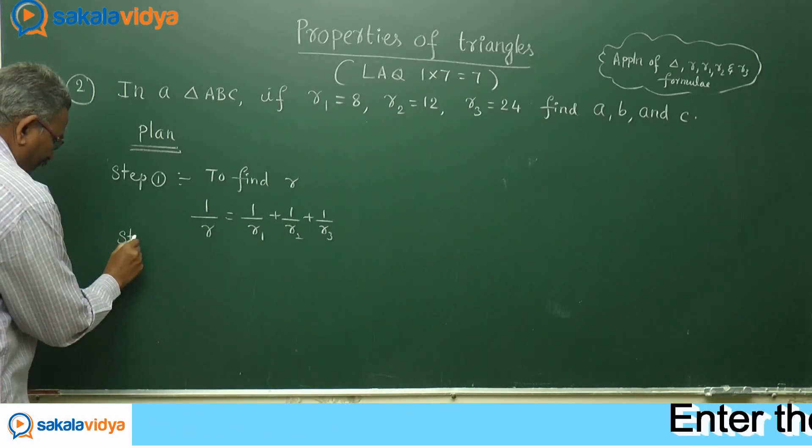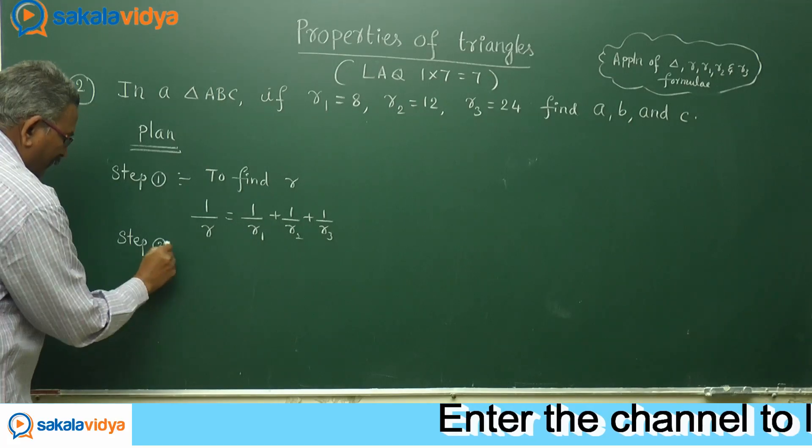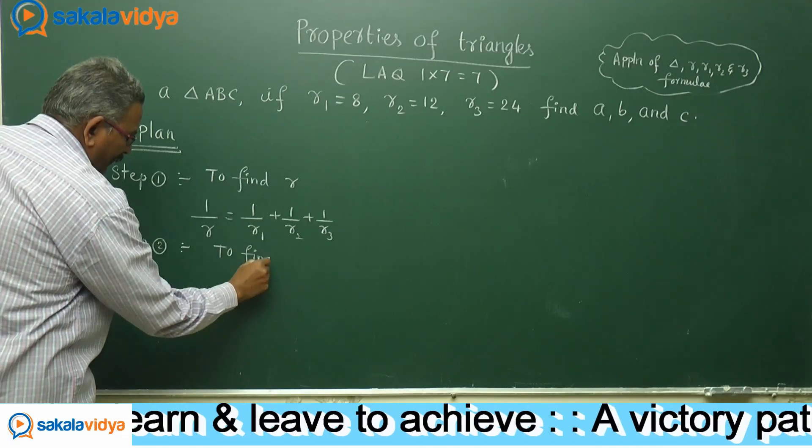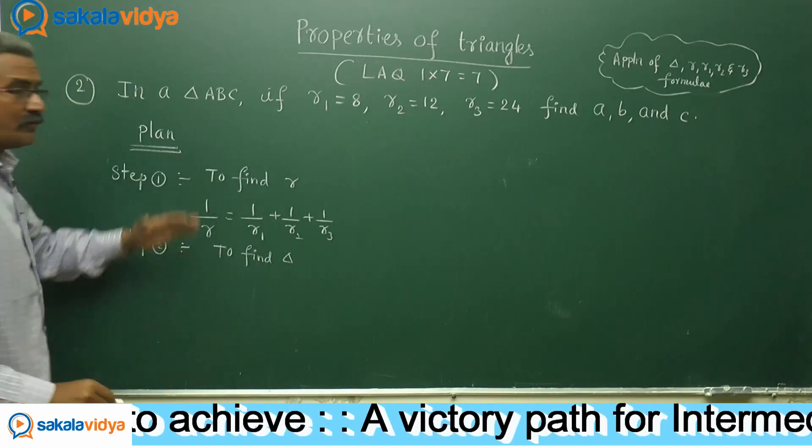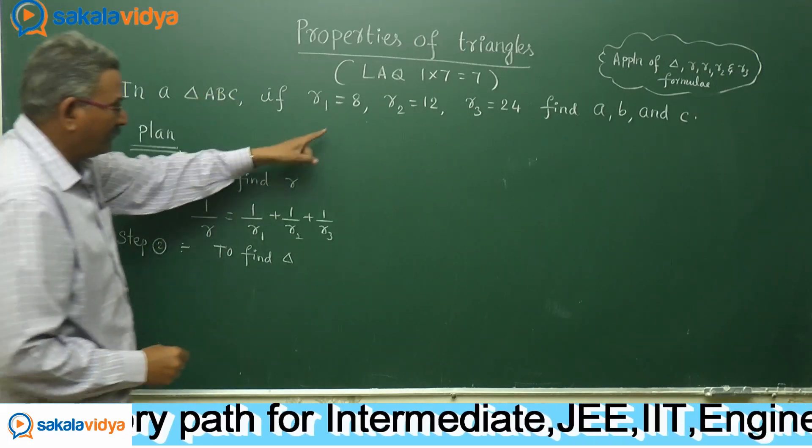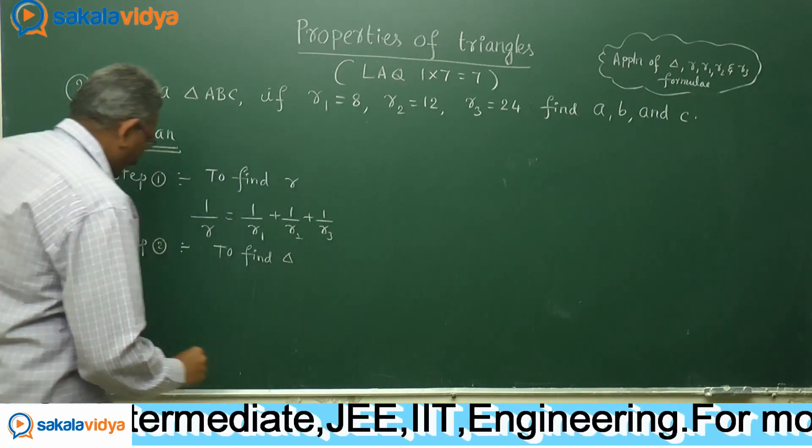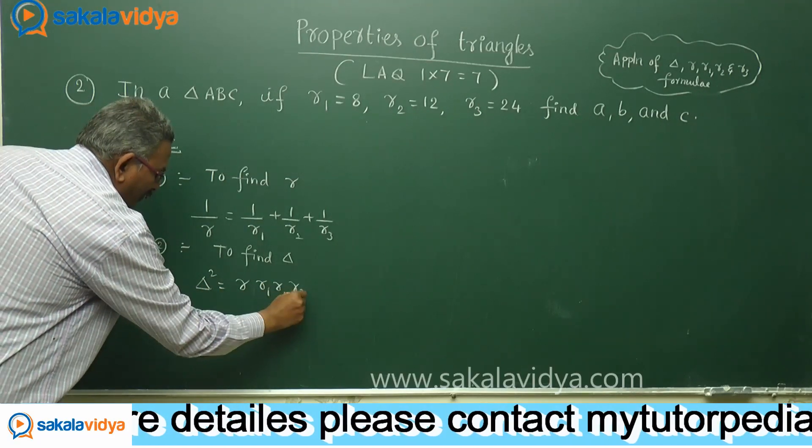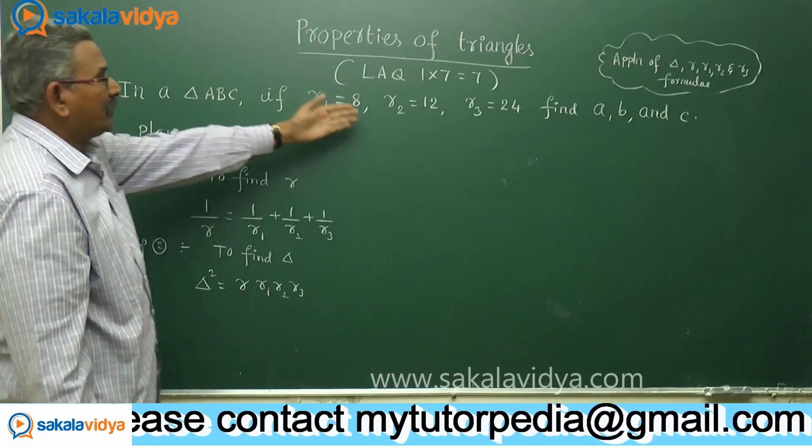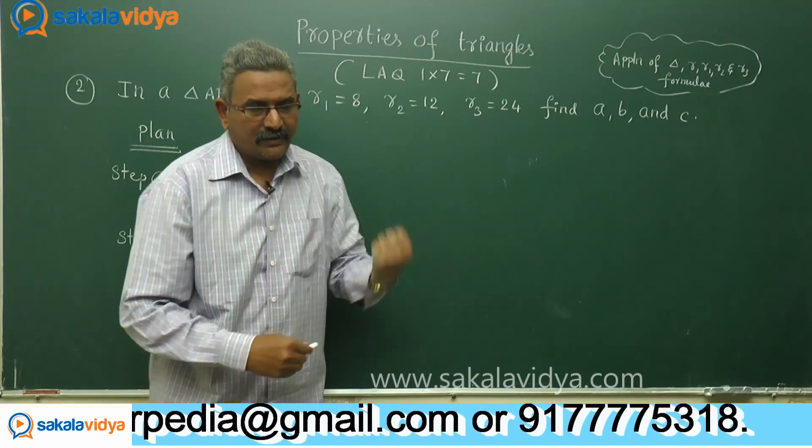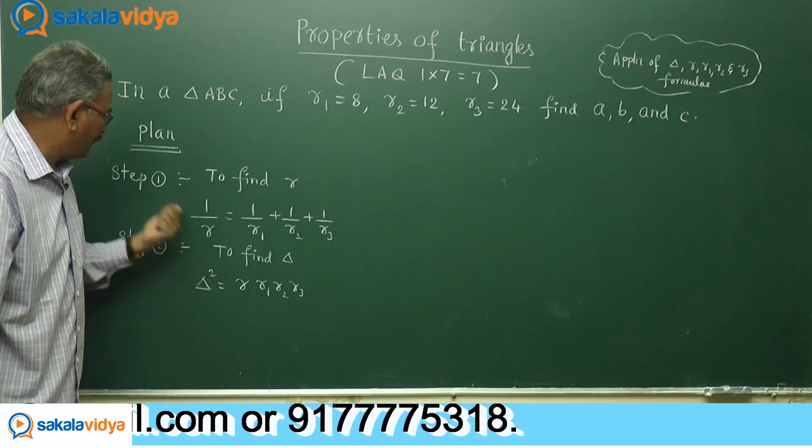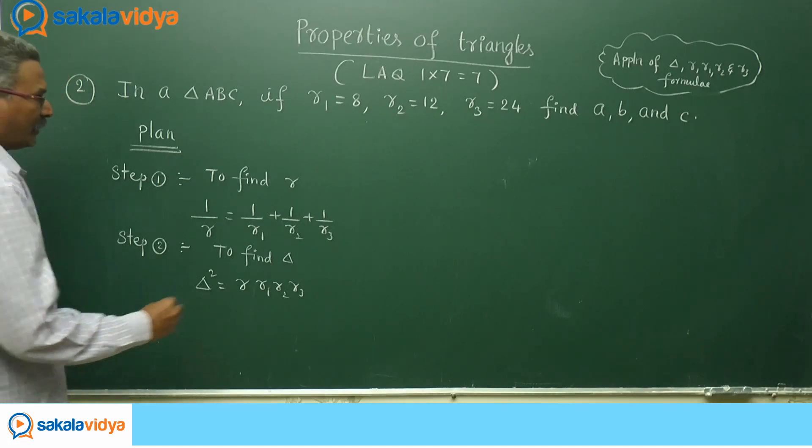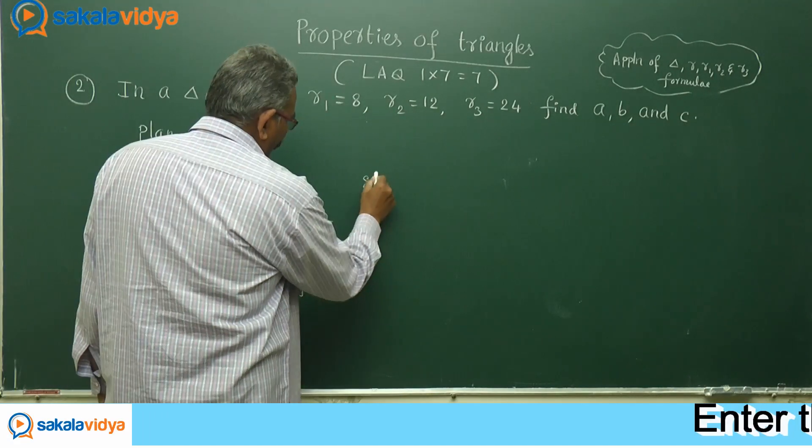Step 2: to find delta. How could you find delta with the help of r, R1, R2, R3 values? We have delta square equals r into R1 into R2 into R3. R1, R2, R3 have been provided for us. But r we have evaluated in step 1, so using step 1, the delta value can be evaluated. Next, step 3: to find S.